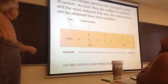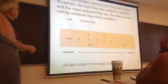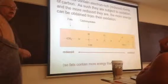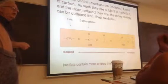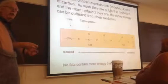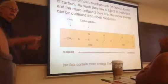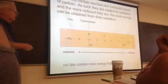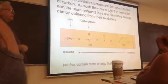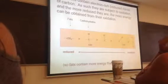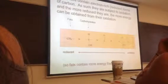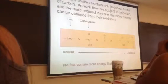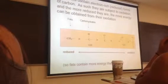We can say there's more electron density in a fat than in a carbohydrate, and this is something we know already. Fats are really high energy, calorically dense foods, because the carbons are more reduced. They're even more energy-rich than carbohydrates, because carbohydrates are already partially oxidized.